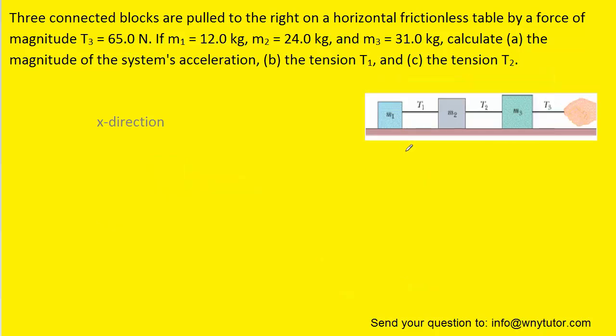Now, the key idea is that the acceleration of the system would apply individually to each block separately. So what we can do to find T1 is draw a free body diagram of just mass one.